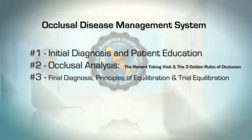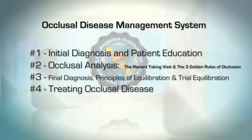Part three is occlusal equilibration, final diagnosis, and the principles of occlusal equilibration and trial equilibration. And finally, part four is how to treat occlusal disease, the four basic approaches to treating occlusal disease, and how to manage parafunction.